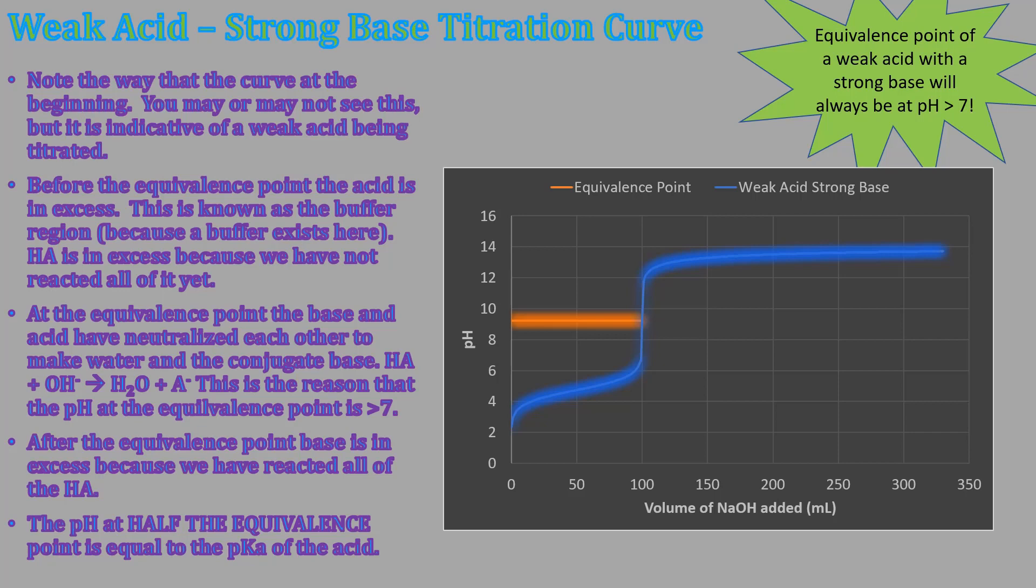So this is basically a summary of everything that I talked about. So remember this point, you may or may not see it. The equivalence point is here and the pKa is always going to be so if the equivalence point happens at 100, the half equivalence point will happen at 50 and it will be the pH at that volume on the line. And then this is your buffer region. So you'll have a buffer there and then above the equivalence point will be excess base and your equivalence point will always be greater than seven when you have a weak acid and you're titrating a strong base. And that's basically it.